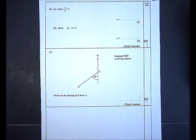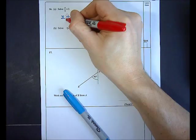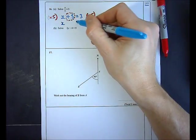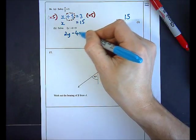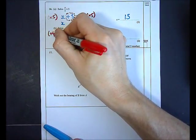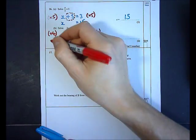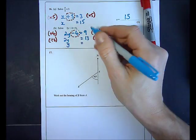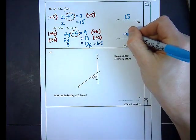In question 16, part A: solve x/5 = 3. Multiplying both sides by 5 leaves x = 15. Part B: solve 2y − 4 = 9. Add 4 to both sides: 2y = 13. Divide both sides by 2: y = 13/2, which is 6.5. I would keep it as the fraction 13 over 2.